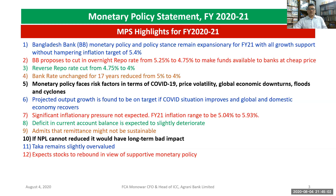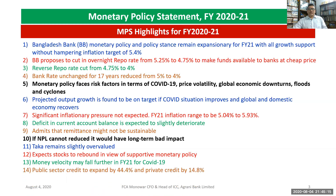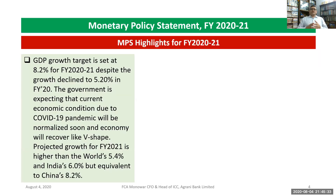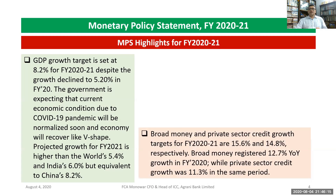Exports are expected to rebound to support monetary policy, but money velocity may fall further. Public sector credit is extended by 44.4% and private credit by 14.8%. The GDP growth target is set at 8.2%. Despite growth declining to 5.2% in fiscal year 2020, the government expects that the economic condition due to COVID-19 will normalize soon and the economy will recover in a B-shaped pattern. The projected growth for 2021 at 8.2% is higher than the world's 5.4% and India's 6%, but equivalent to China's 8.2%. Broad money target is 15.6% and private sector credit growth target is 14.8%.